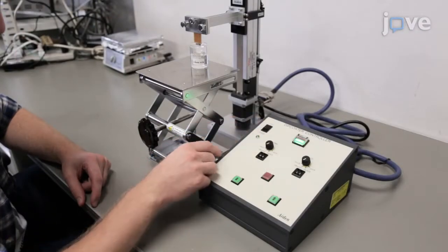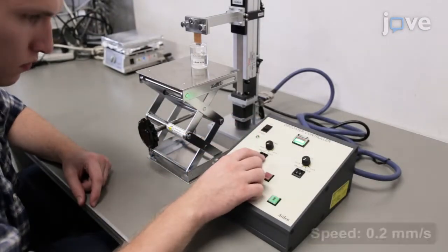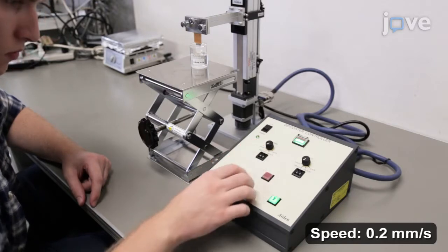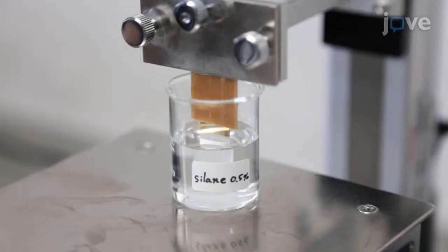Then, lower the device to immerse the atomization area. It is important to keep the dipping speed slow and constant to obtain a uniform film coating. Keep the device in the solution for 5 minutes.